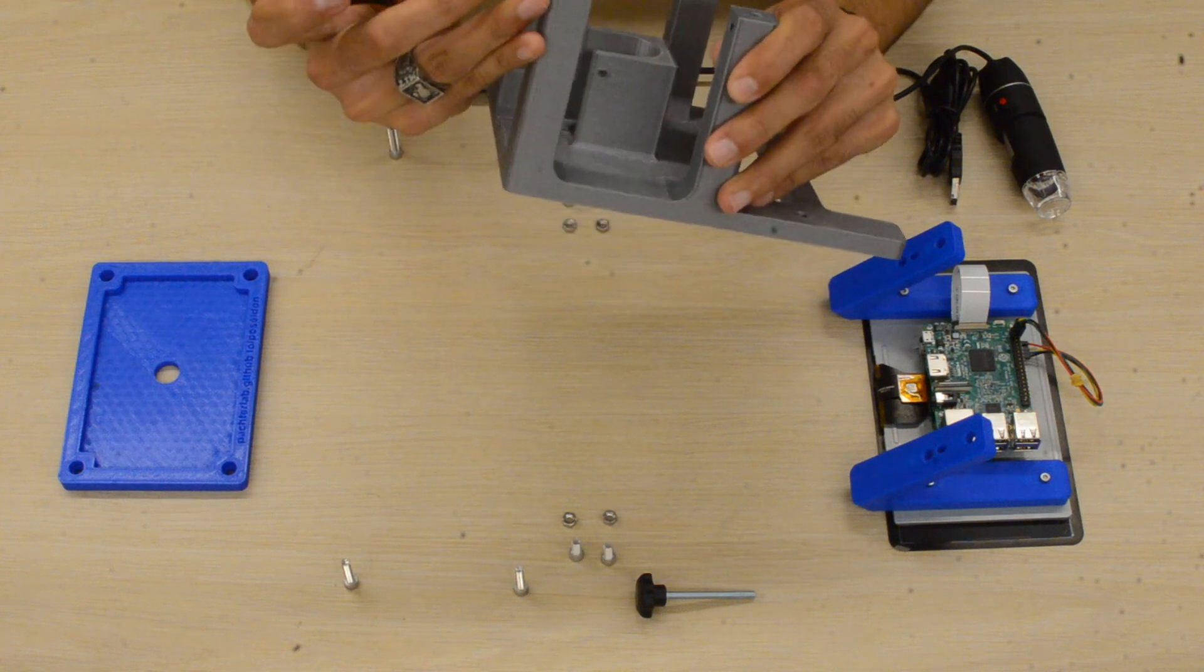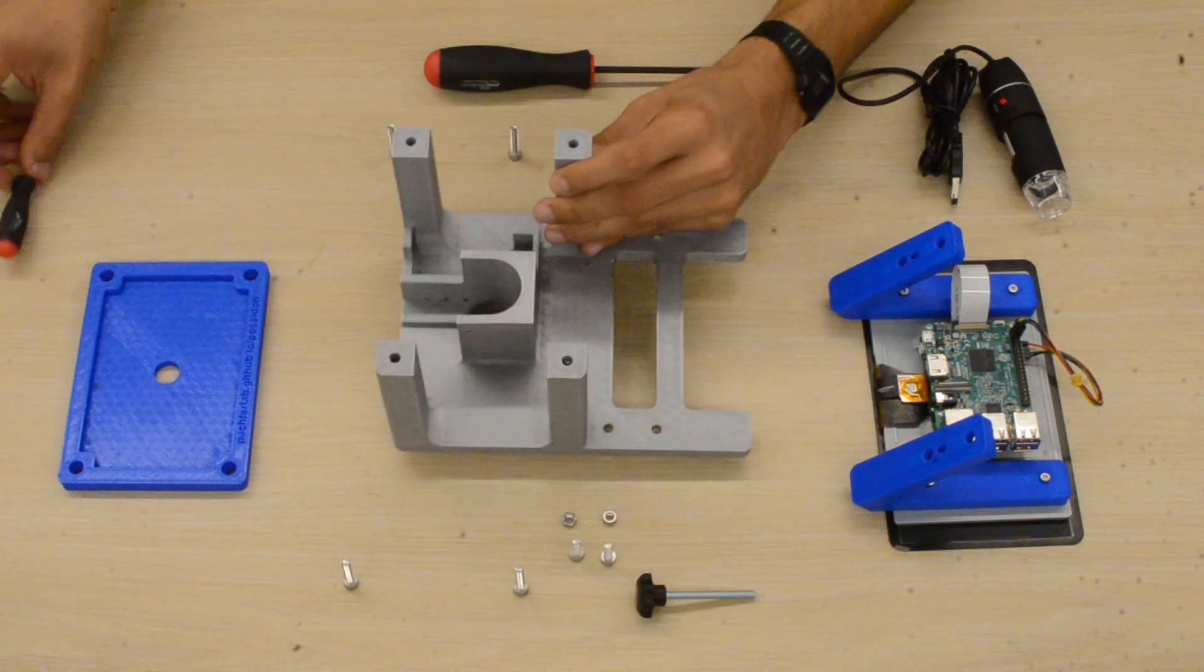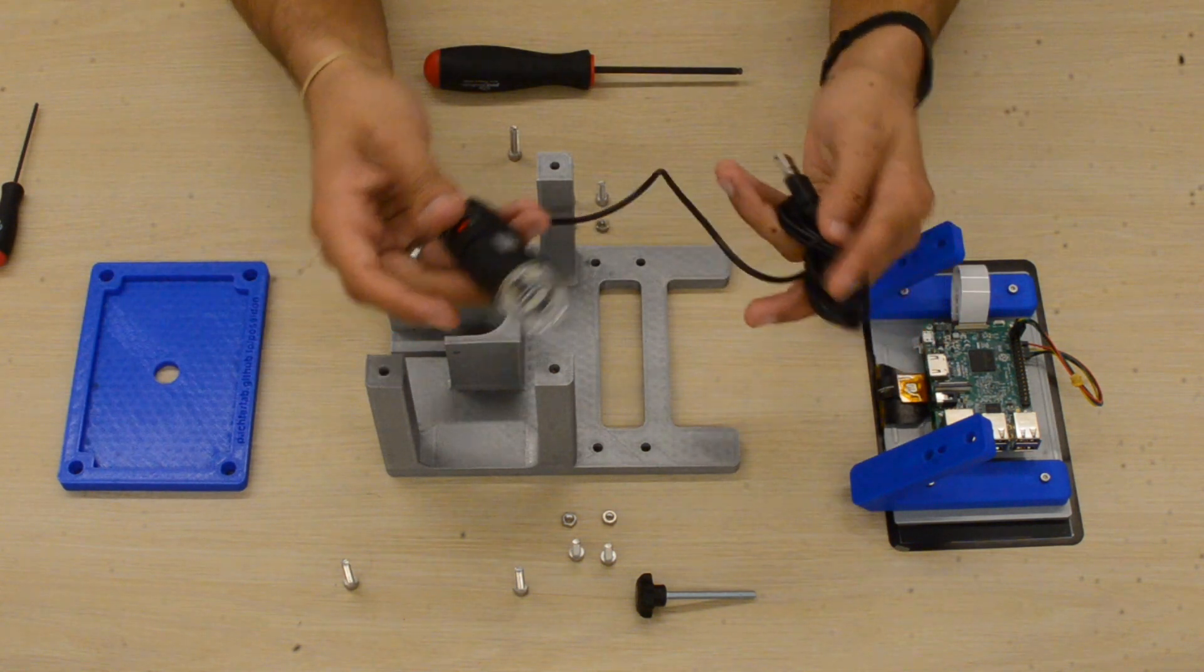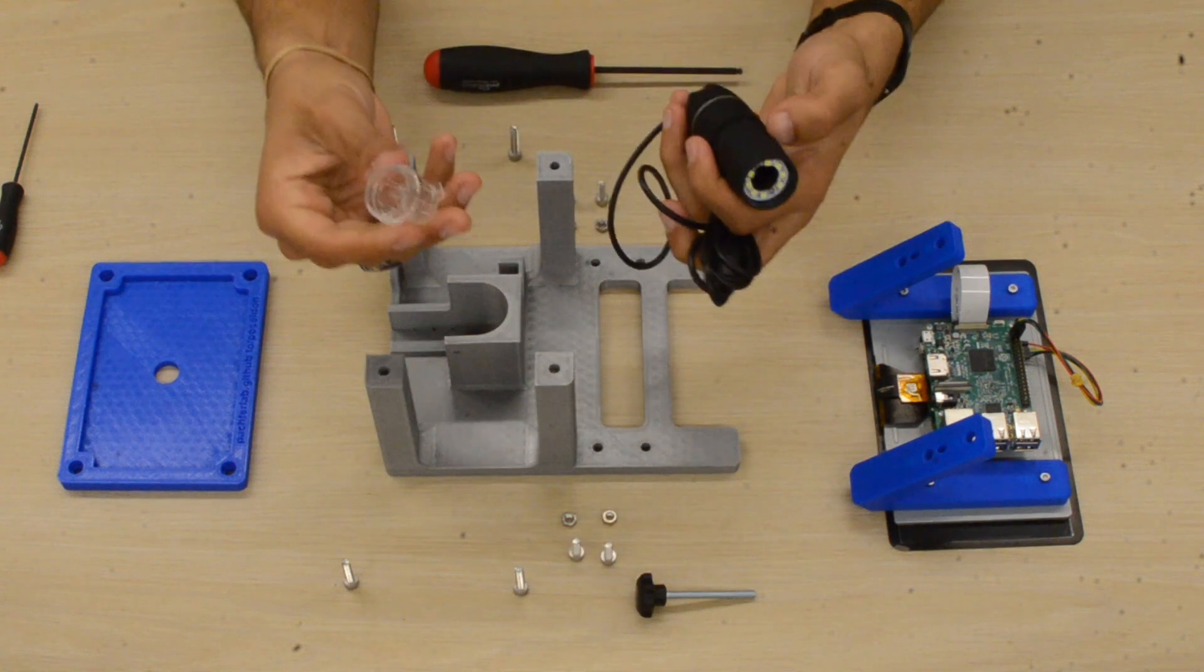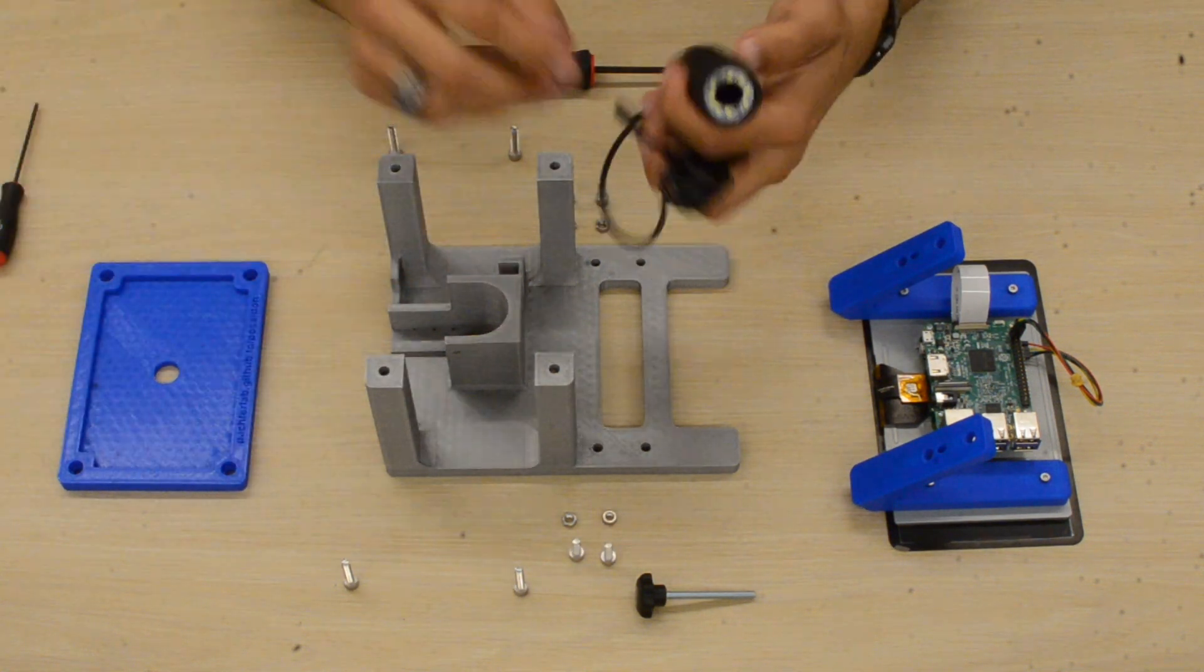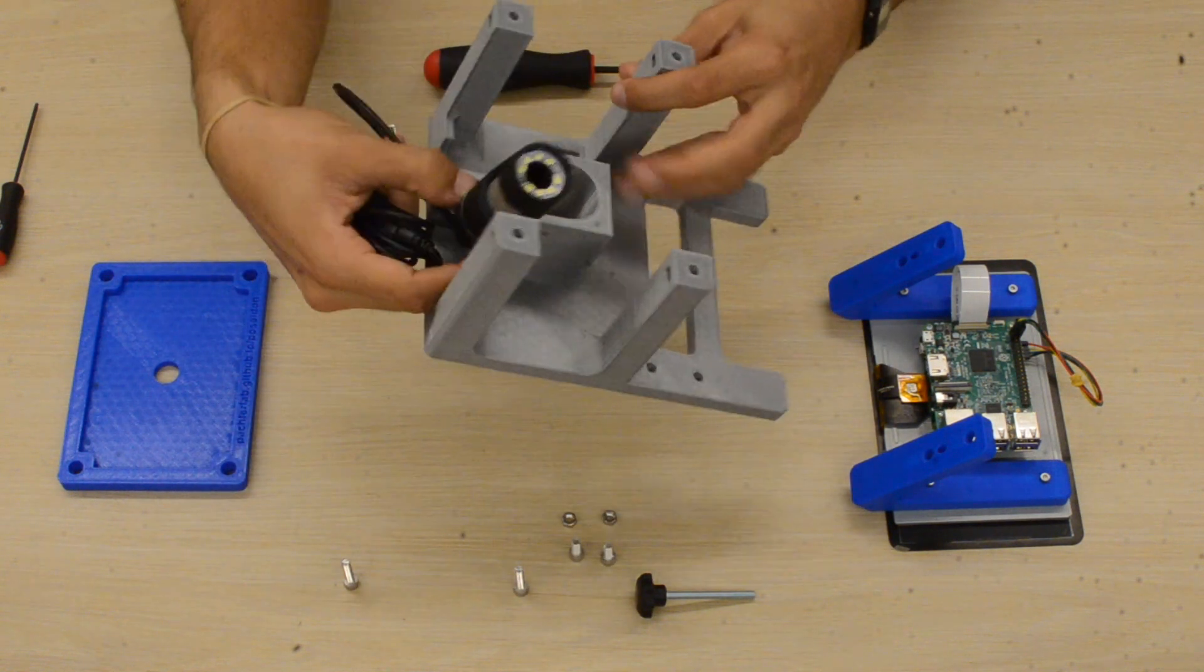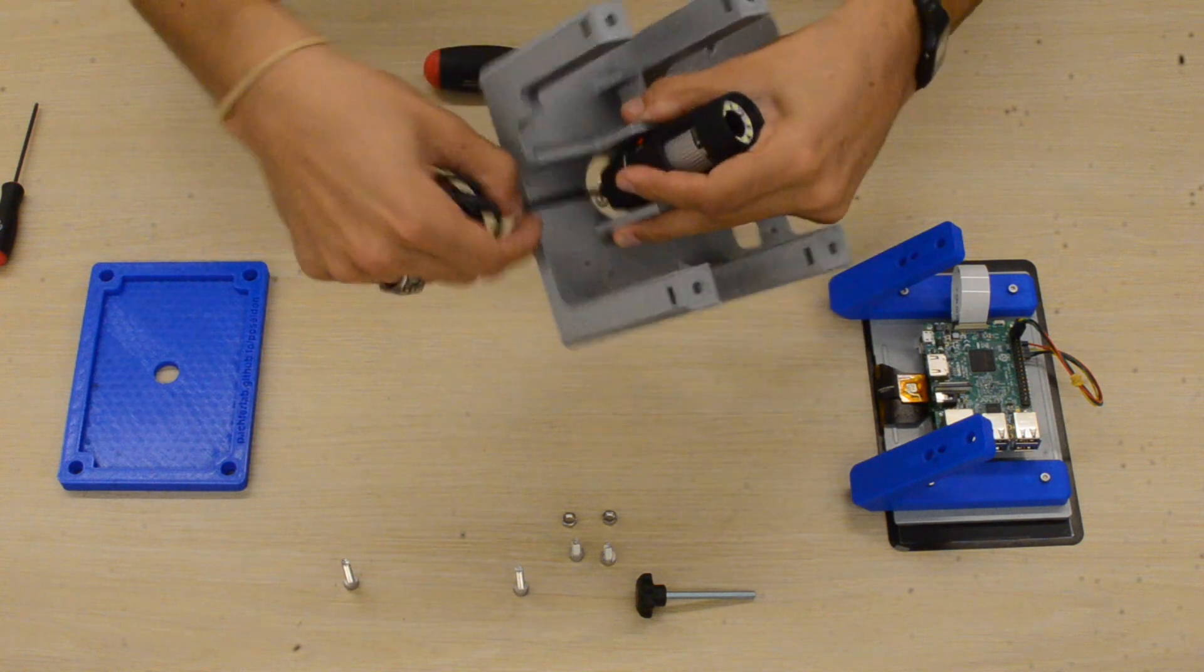Next up, we'll grab our USB camera. Now it comes with this kind of annoying plastic thing on the front, so we'll go ahead and just pop that off. You can either screw it off or just slide it right off; it shouldn't really be that hard. We'll go ahead and place that in the camera mount. It should fit quite nicely, and the cable should just slip right into that slot right there.